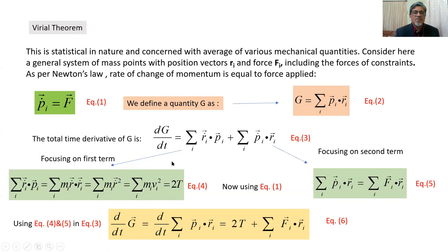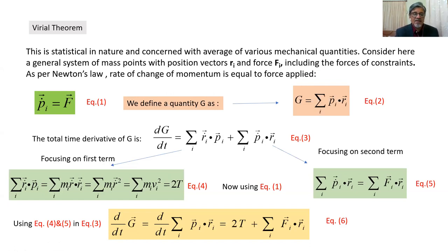Focusing on the first term, R-dot-i dot Pi: since momentum is written as Mi times R-dot-i, it becomes Mi times R-dot-i squared. Since R-dot-i is the velocity Vi, this equals twice the kinetic energy T, as kinetic energy is one-half m v-squared. So the first term is two times the kinetic energy, represented by equation number four.